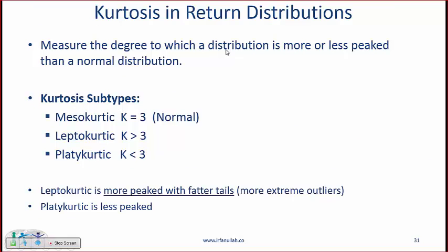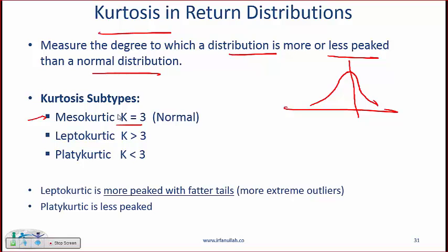Skewness tells us how distribution is spread to the left and right of a center. Kurtosis tells us about how high or how fat a given distribution is. So it measures the degree to which a distribution is more or less peaked than a normal distribution. And you don't need to get too hung up with this, just a few basic facts. A normal distribution is mesokurtic, so it has a kurtosis of 3, just remember that. Leptokurtic means that kurtosis is more than 3 and platykurtic is k less than 3.